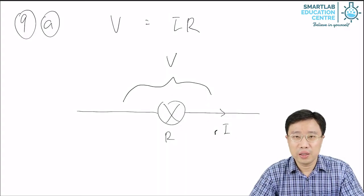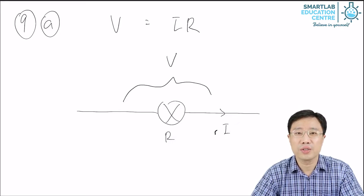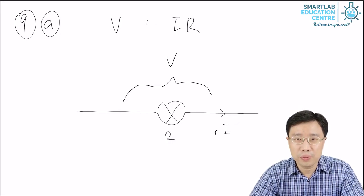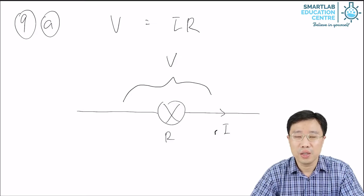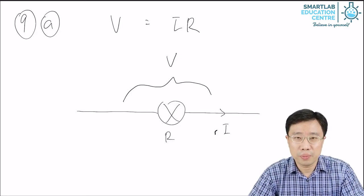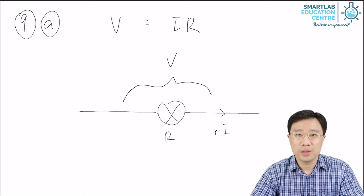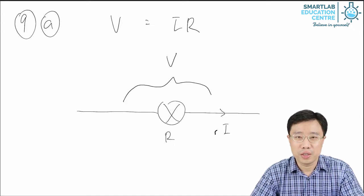So in topics 7 and 8, I've shown you how to calculate the effective resistance of two arrangements of resistors. Now, in this topic, you will also need to calculate the currents and the voltages in a circuit. How do we do that?